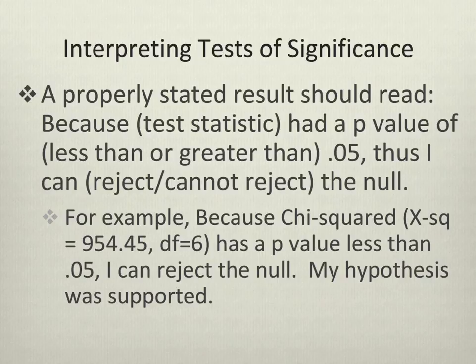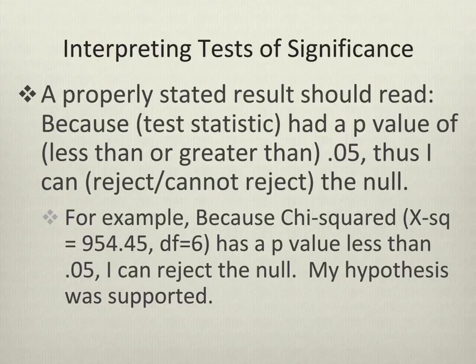When you complete your final project, make sure that for each hypothesis you test, you have a clearly stated statement of results. Your results should read: because clearly identified whichever statistic you're using has a p-value of less than or greater than .05, you're either going to reject or not reject the null. It's very important that anyone reading your work is left in no doubt as to what your findings are.